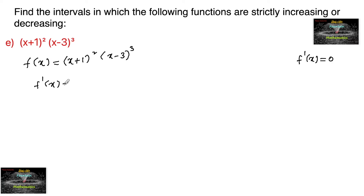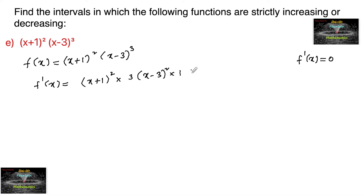f'(x) = (x+1)² · (x−3)³. By using the UV rule: (x+1)² · d/dx[(x−3)³] + (x−3)³ · d/dx[(x+1)²]. The derivative of (x−3)³ gives 3(x−3)² · 1, and the derivative of (x+1)² gives 2(x+1)¹ · 1.